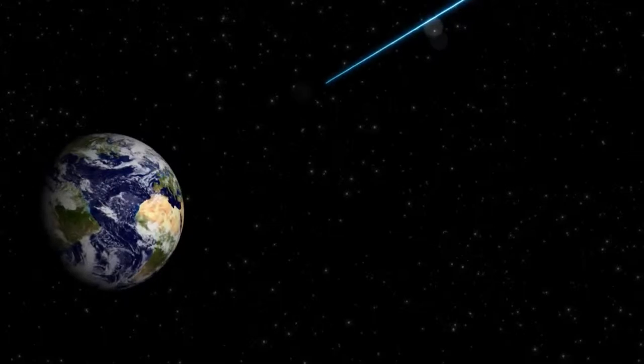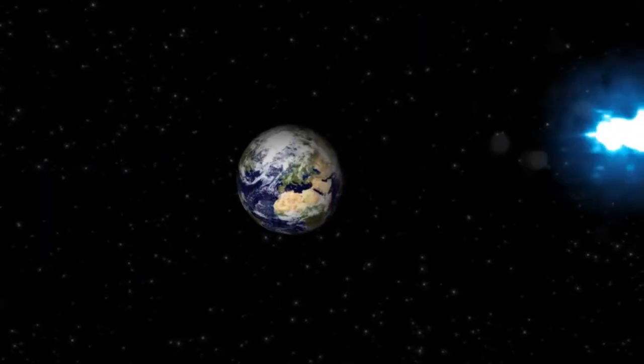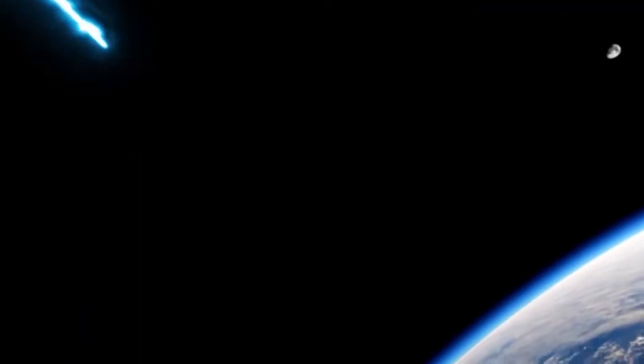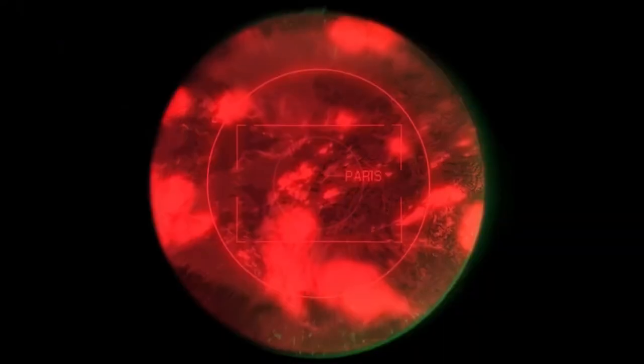Earth is the third planet from the Sun and the only astronomical object known to harbor life. According to radiometric dating and other sources of evidence, Earth formed over 4.5 billion years ago.